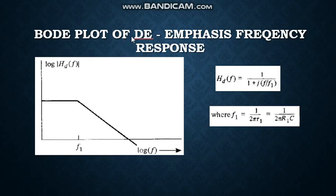This is the Bode plot of de-emphasis frequency response. In the Bode plot of de-emphasis, you can see there is frequency f1. Till frequency f1, the response is flattened, and after f1 the response is decreasing. So, the transfer function H_DE(f) = 1 / (1 + jf/f1), where f1 = 1/(2πR1C).